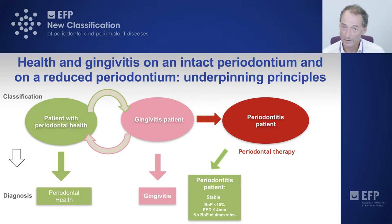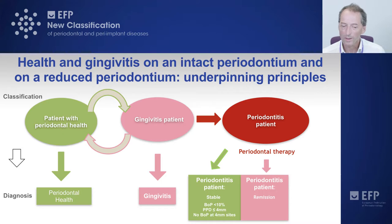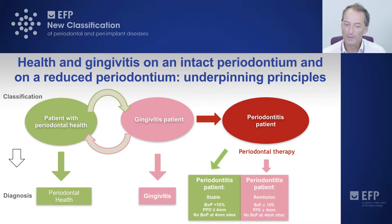Stability also requires probing pocket depths of 4mm or less, with no bleeding at a 4mm site — otherwise that would be a periodontitis site. A periodontitis patient who meets these criteria is periodontally stable. If treatment works but the patient has slightly too much inflammation to be considered fully stable, we use the term remission: more than 10% of sites bleeding with some generalized gingival inflammation, but probing pocket depths still 4mm or less and no bleeding at a 4mm site. That patient is a periodontitis patient in remission.